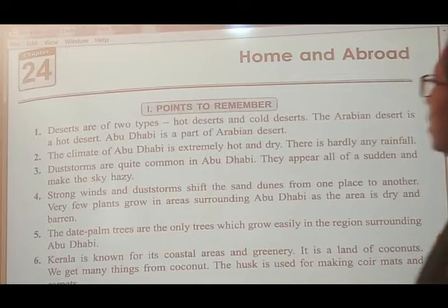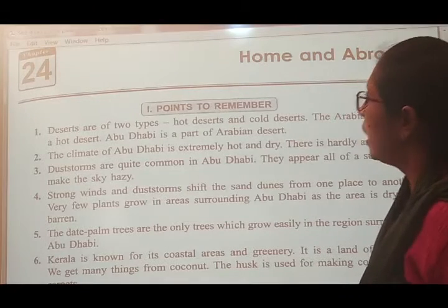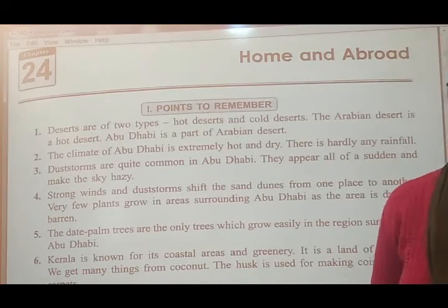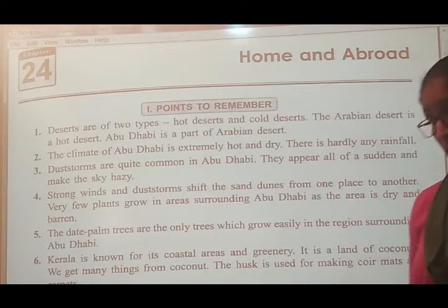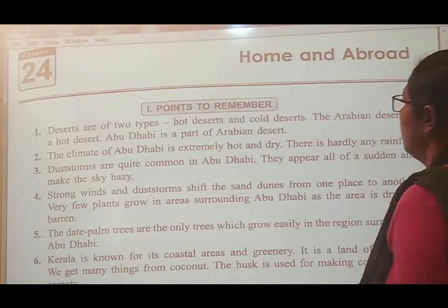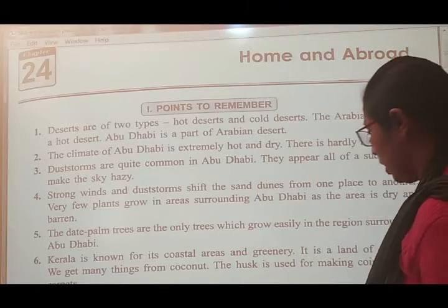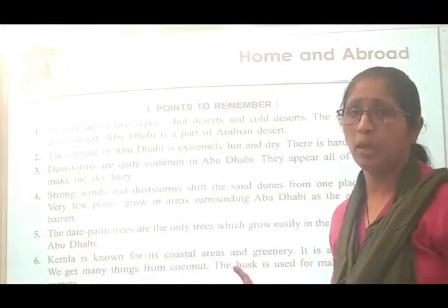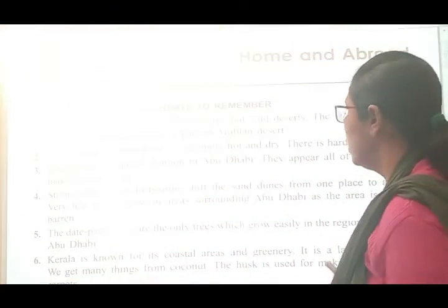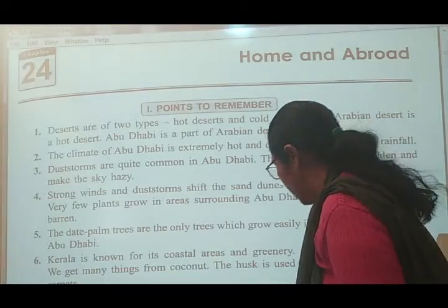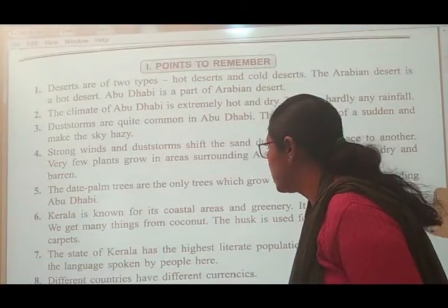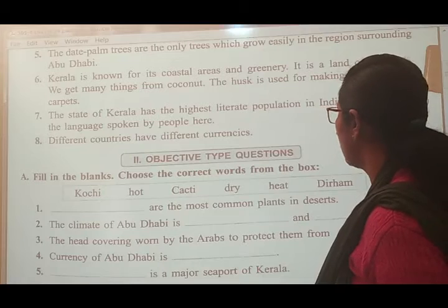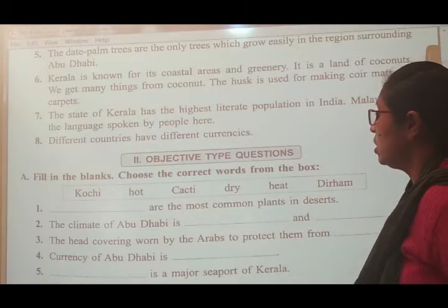Hello students, now I am explaining our 24th lesson of EBS Practice Workbook exercise. The topic is 'Home and Abroad.' Here is your exercise: fill in the blanks — choose the correct word from the box: kochi, hot, kakki, heat, dry, heat, and dhiram.